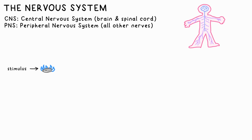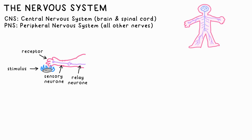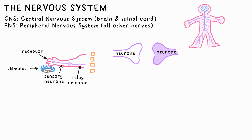A receptor in your skin detects a change due to a stimulus, like a hot hob. An electrical signal travels to the spine through sensory and relay neurons as nerve cells. The signal travels across the gap between these neurons, called the synapse, by a neurotransmitter chemical.